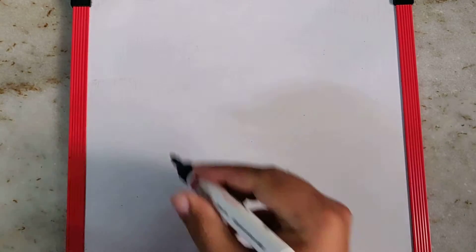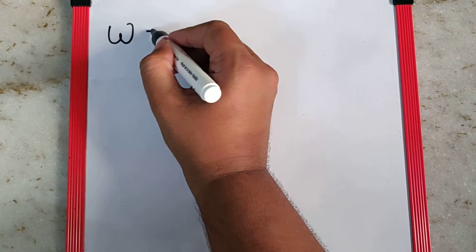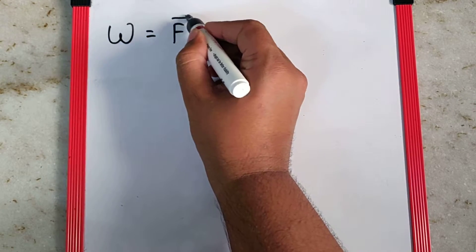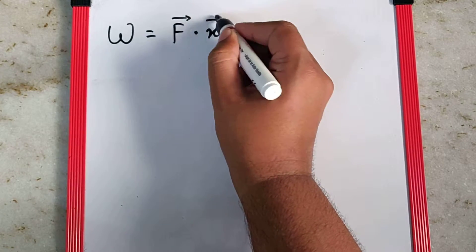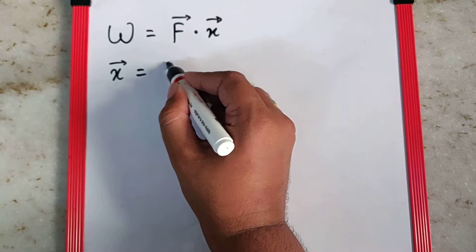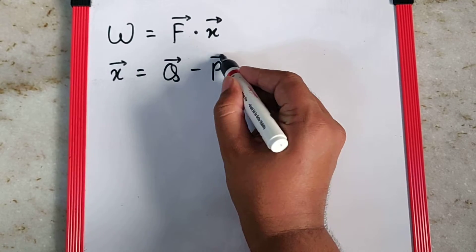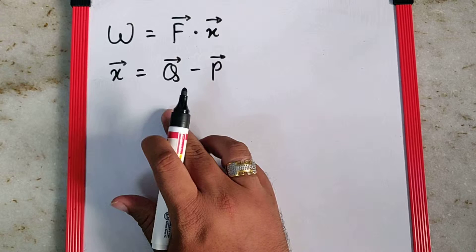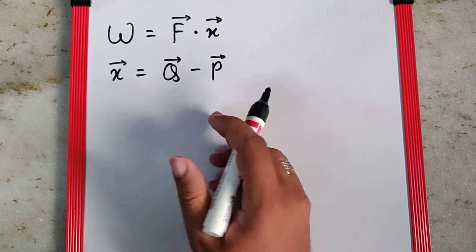The work done by forces - we know work done is the dot product of force and displacement. Displacement is the final position minus the initial position. Final position is Q and initial position is P.